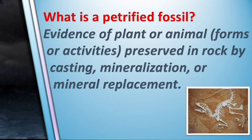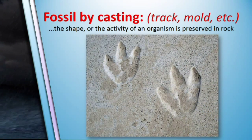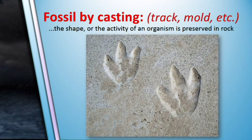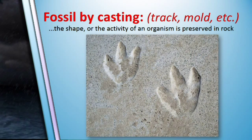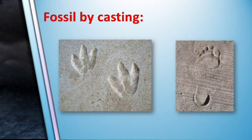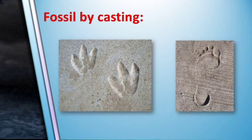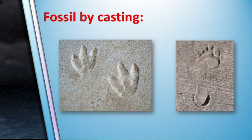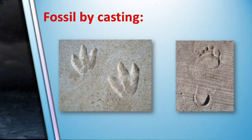A fossil cast — in this case of a track — is made when the shape or activity of an organism is preserved in rock but the organism itself is not preserved. This picture is of a dinosaur footprint that was permanently cemented into stone. The dinosaur track was not made in solid rock; it was made in wet sedimentary deposits we might normally call mud. Then later those sediments hardened into rock, just like concrete does.